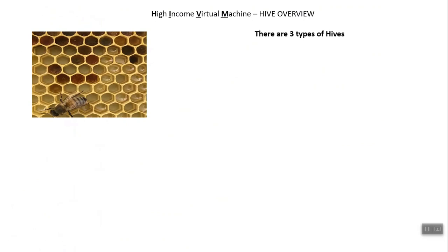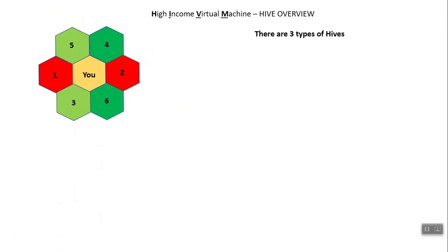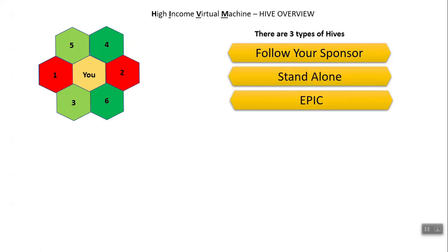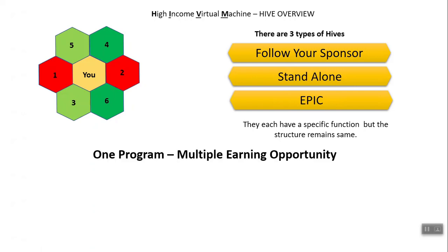The structure of this is in the form of a Beehive, that's why it's called a Hive, which also means High Income Virtual Machine. There are three types of hives: the Follow Your Sponsor Hive, the Standalone Hive, and the Epic Hive. They each have a specific function but the structure remains the same. There are five types of opportunities within this program on how you can earn, so a single program gives you five different types of earning.